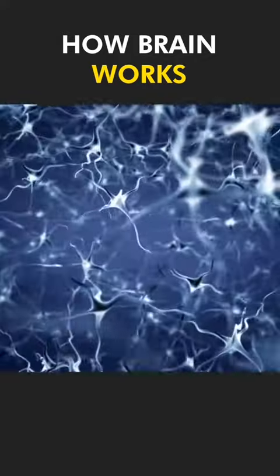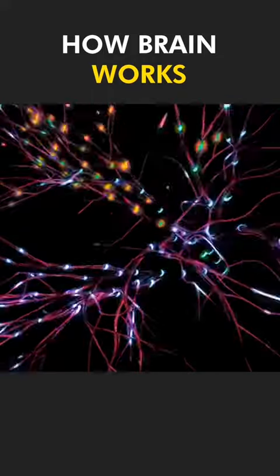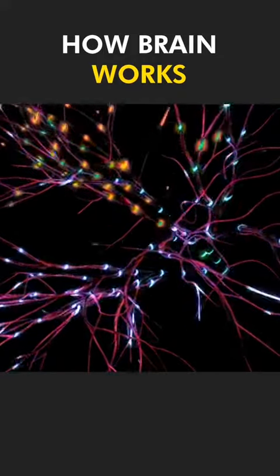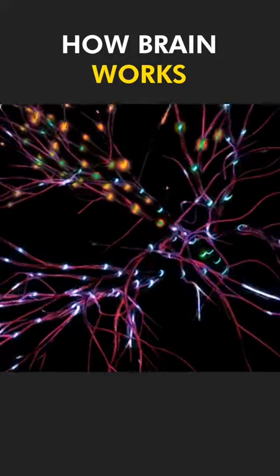The brain is like a supercomputer with 86 billion tiny cells, called neurons. These neurons talk to each other using electrical signals and chemicals.